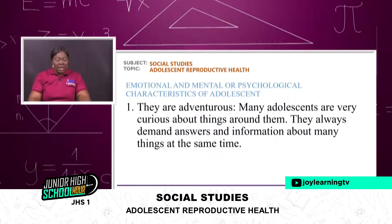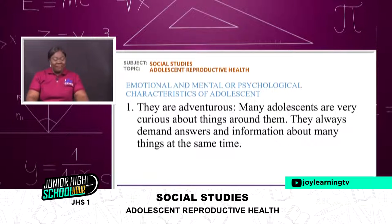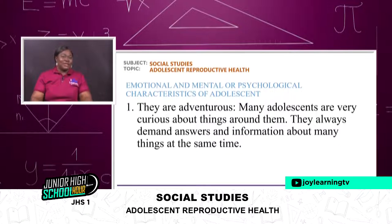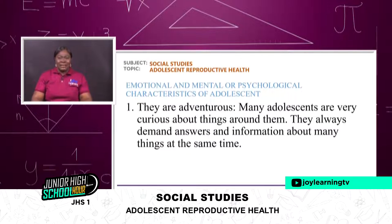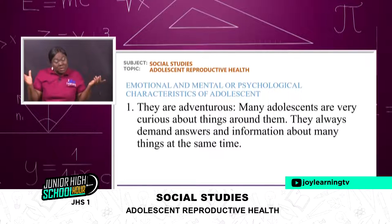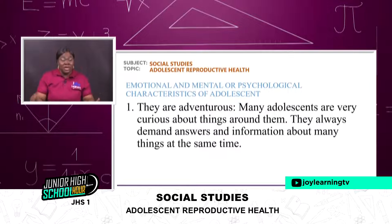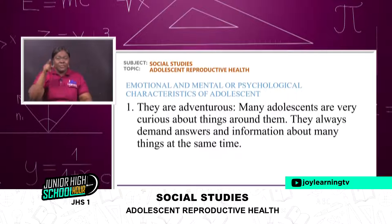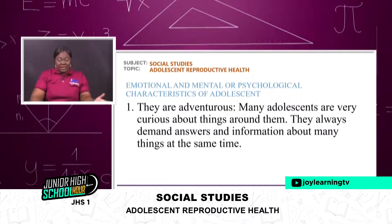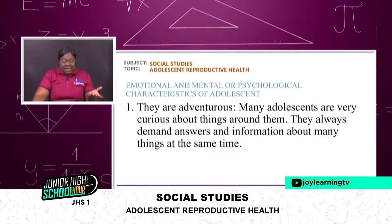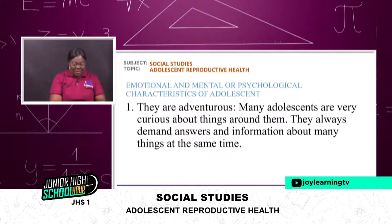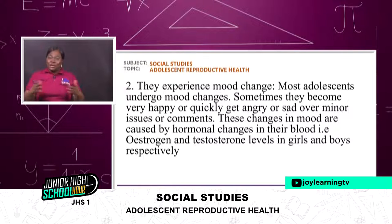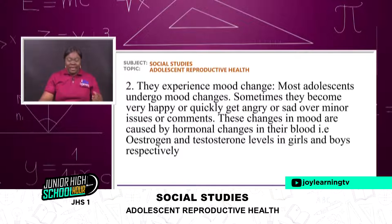Now let's look at some of the emotional and mental or psychological characteristics of adolescents. One: they are very adventurous — many adolescents are very curious about things around them. You are very curious; you want to know why there is hair in someone's armpit, why this person has become this and another has not. The adolescent always wants to know what is over there and always wants answers to their questions. Many adolescents are very curious and always demand answers and information about many things.